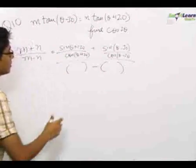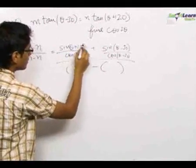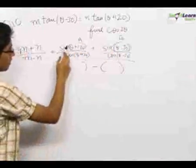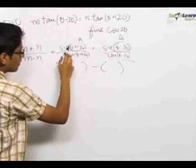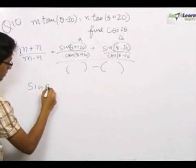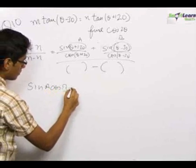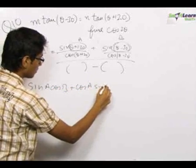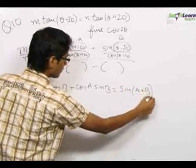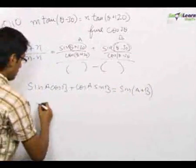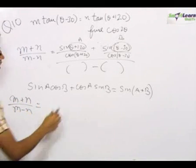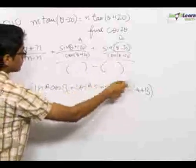Taking the LCM, and letting a = θ + 120° and b = θ - 30°, the numerator becomes sin a cos b + cos a sin b, which we know equals sin(a + b). So we can directly write the numerator as sin(a + b) = sin(2θ + 90°).